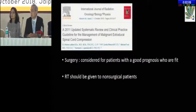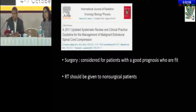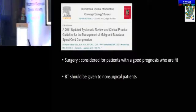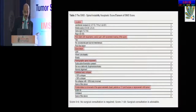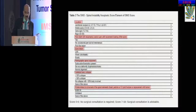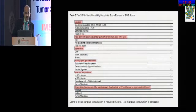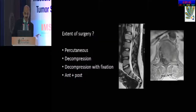Surgery is considered for patients with a good prognosis who are fit, and only if the earlier parameters fall into place. If not fit for surgery, then definitive RT. The spinal instability neoplastic score takes into consideration: location, pain, bone lesion type, radiographic spinal alignment, vertebral body collapse, and posterolateral involvement — to decide on surgery or not.